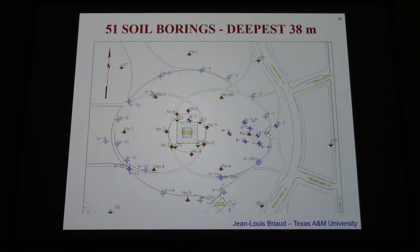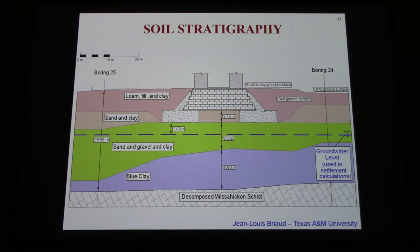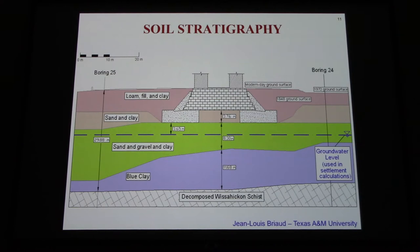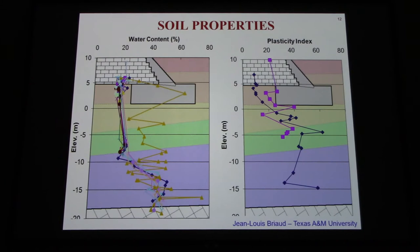There have been many soil borings done around the monument. Here is a cross section of the soil layers. You can see fill and clay — alluvium from the river. The original foundation was in a relatively soft pink layer. The underpinning allowed Casey to get down to a sand and gravel layer that is much, much stronger. I'm not sure if Casey knew that sand layer was there, but he certainly made a good move by putting the foundation down into that sand and gravel layer.